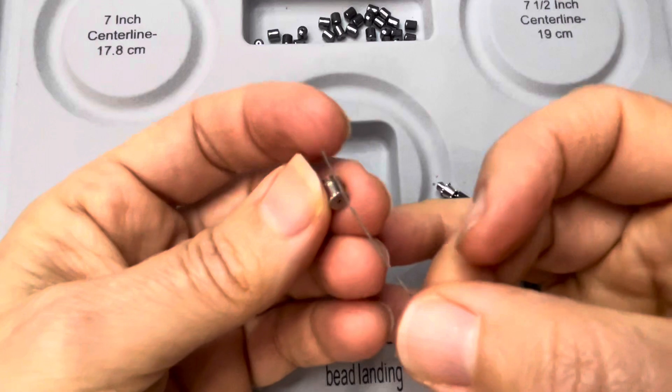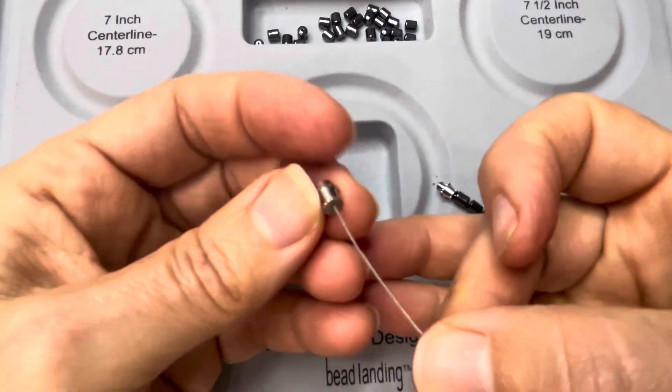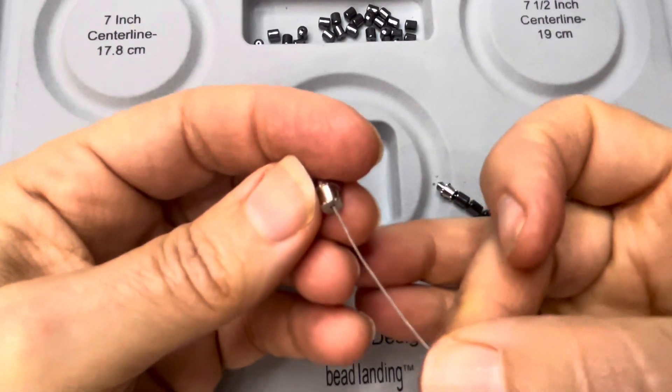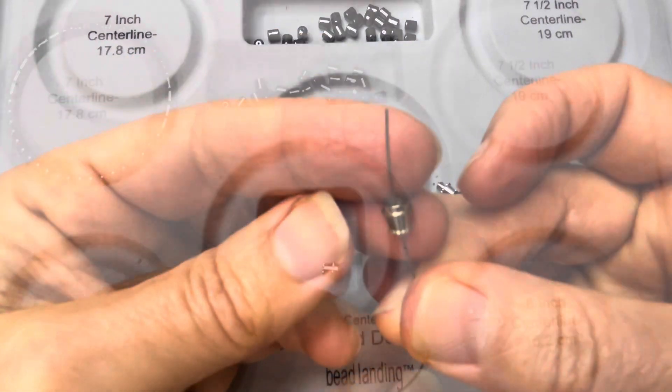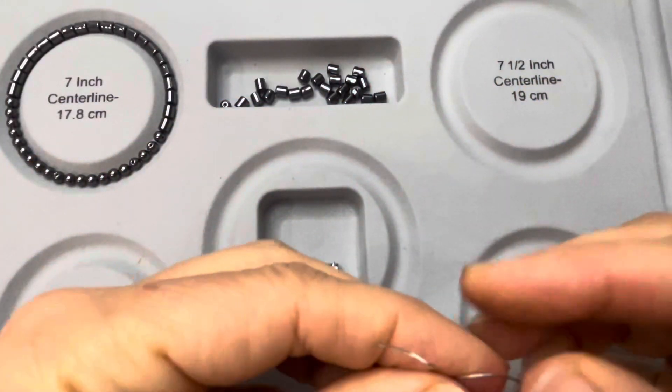First step, let's feed the wire right through one half of the barrel. If you've never worked with a barrel clasp before, it's actually got two sections that you're going to be screwing together.